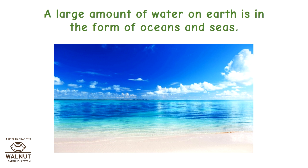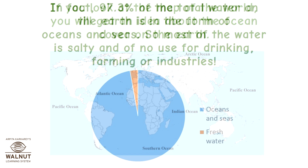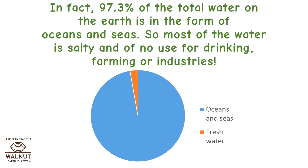A large amount of water on earth is in the form of oceans and seas. If you look at the map of the world, you will get an idea about the ocean cover on the earth. In fact, 97.3% of the total water on the earth is in the form of oceans and seas. So most of the water is salty and of no use for drinking, farming, or industries.